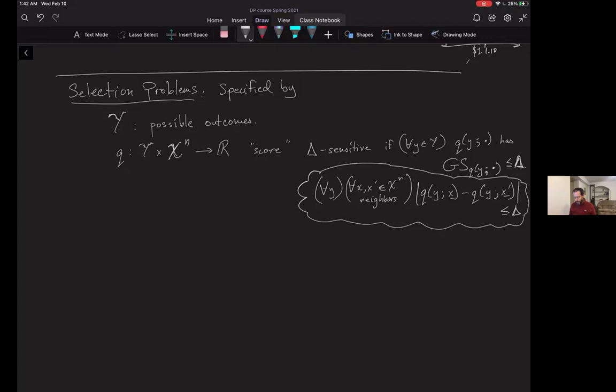The exponential mechanism is a general differentially private algorithm that will always be differentially private and allows us to approximately solve this type of selection problem. Here's what our algorithm will look like. It will take as input a dataset x as well as this score function, input score function and parameter epsilon, and also this number delta, which we'll assume to be a valid upper bound on the sensitivity. In general, for whatever score function you're using, you have to figure out what the right delta is.